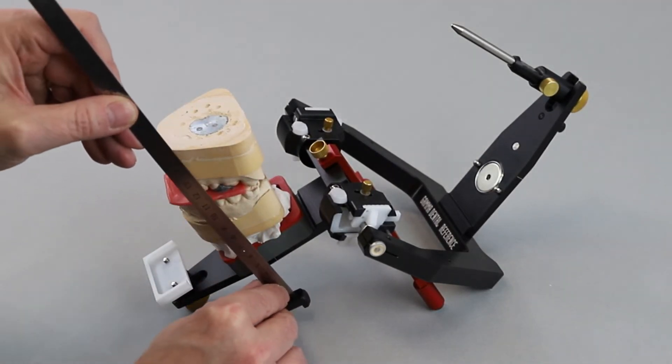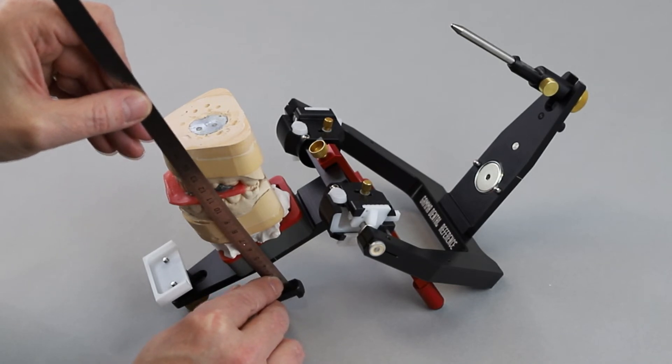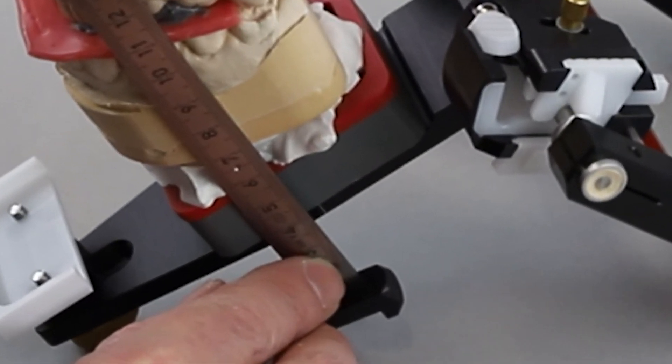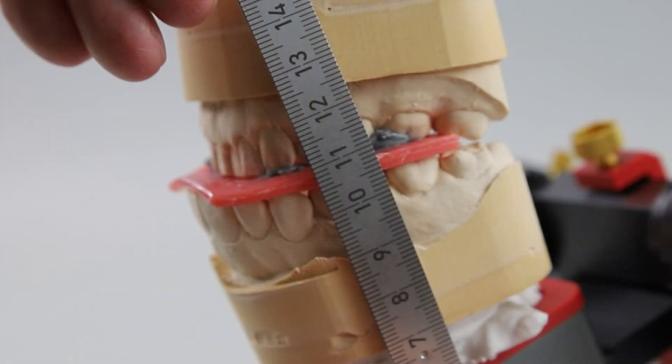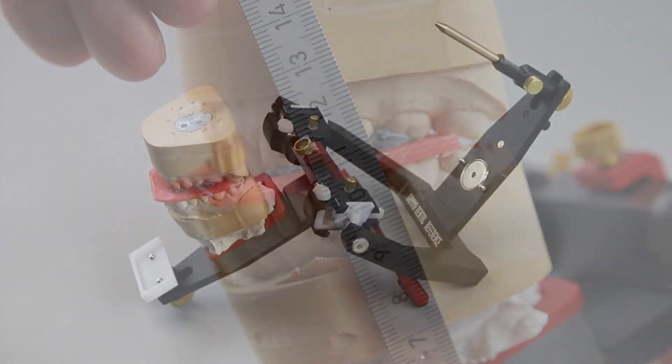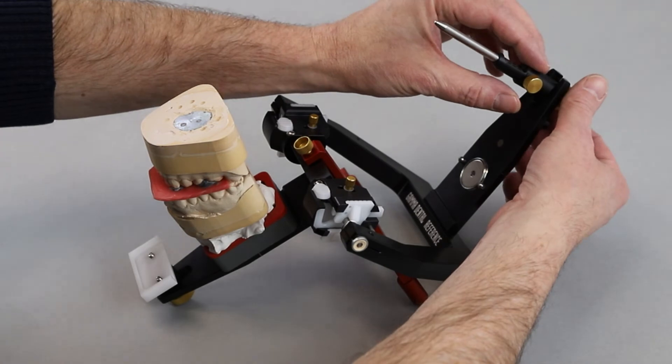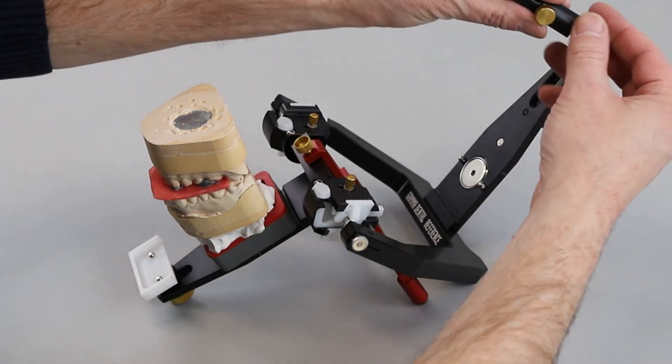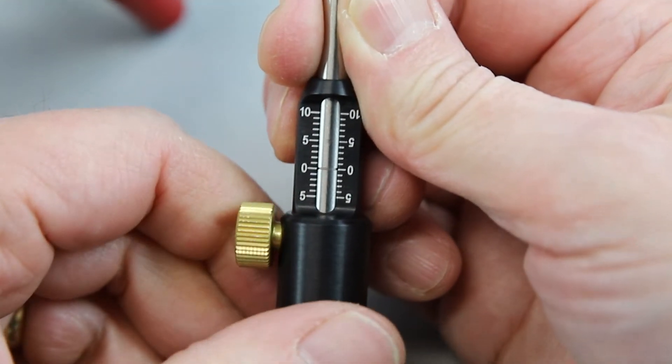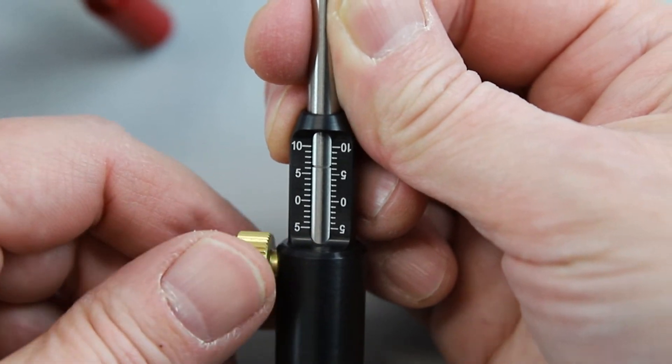Measure how far the bite is blocked by the bite registration in the area of the center mark of the articulator. The incisal pin must be pulled out to twice the amount indicated, starting at the zero line.